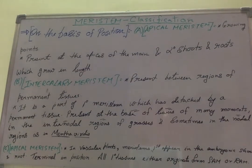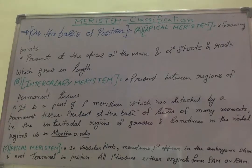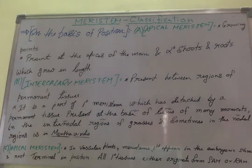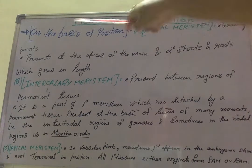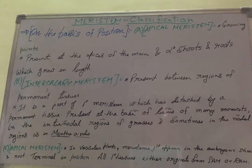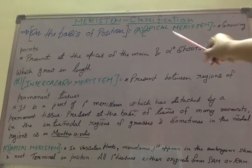Welcome back guys. This is the end of classification of meristematic tissue, and the last basis of classification is on position. On the basis of position, meristematic tissue is classified into three main groups. The first is apical meristem.